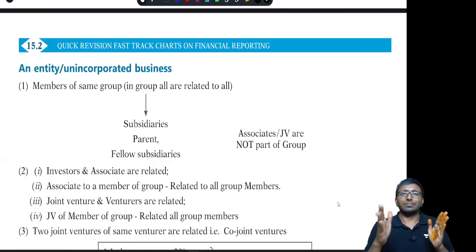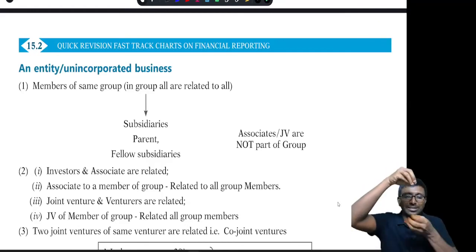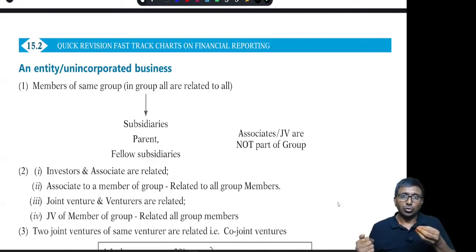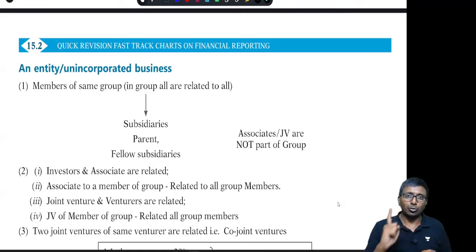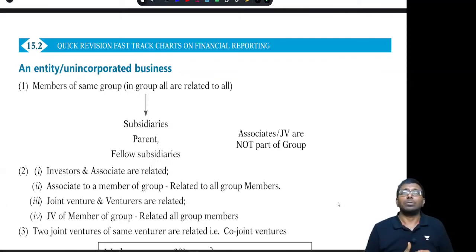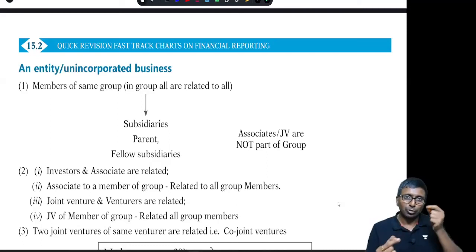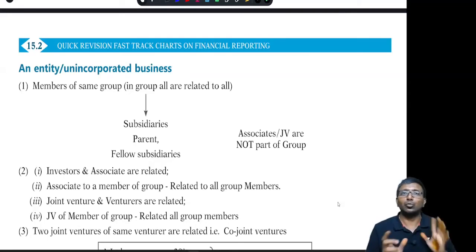Second, an investor and its associate are related. A joint venture and its venturer are related. Joint ventures within the same group are also related. Associate of a group member — if you are associated to one member of the group, then you are related to all the group members. Similarly, a joint venture of any member of the group is related to the entire group.